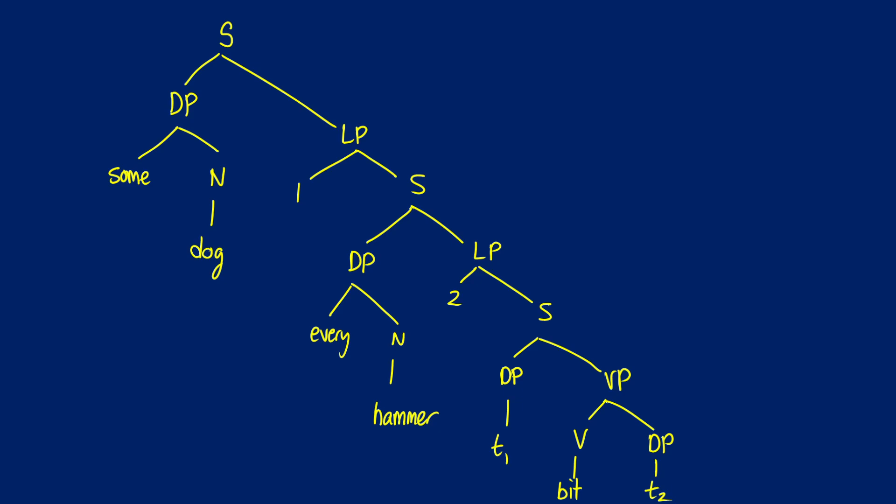We're going with some dog bit every hammer, where some dog takes scope over every hammer, meaning there's a particular dog that bit every single hammer out there. It's exactly the same as before. We're going straight up to the sentence level for T1 bit T2. This is going to be one if and only if X1 bit X2.